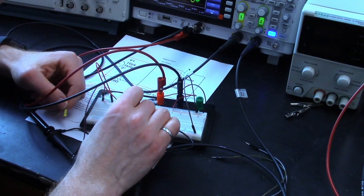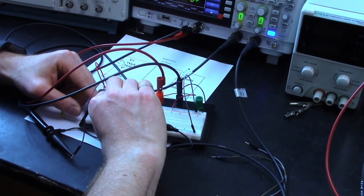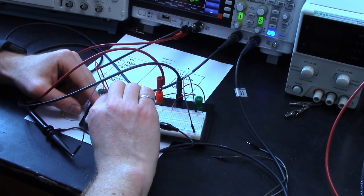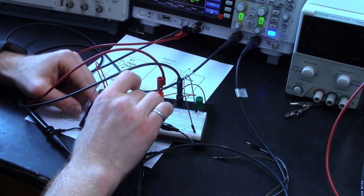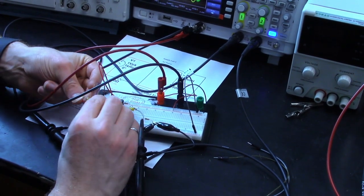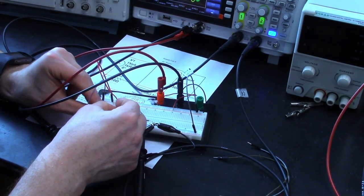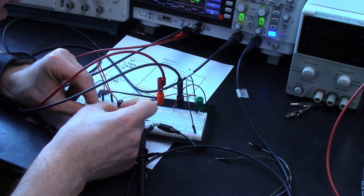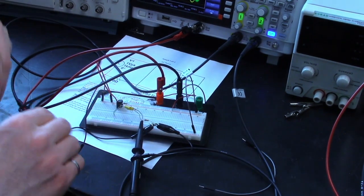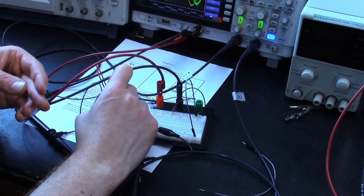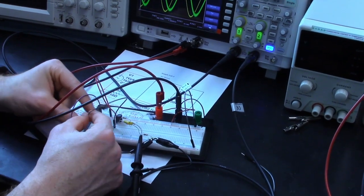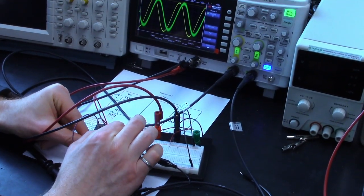Before we do that though, just to make it a little bit more convenient, I'm going to hook them up in parallel over to this intermediary point, this intermediate point, and then what I'm going to do is use a jumper wire so that I can connect them up into the circuit point easily with one plug.